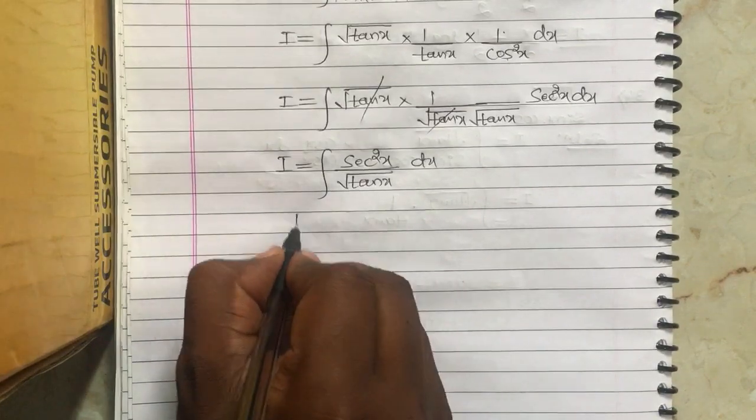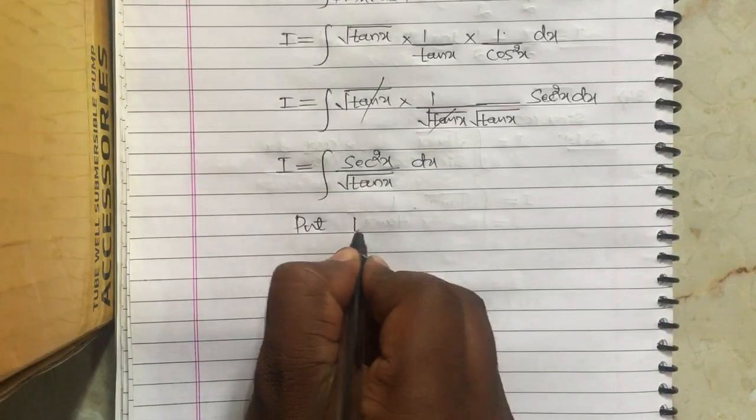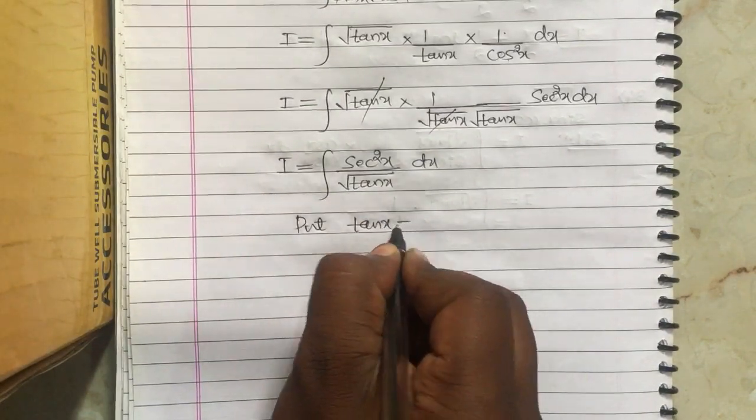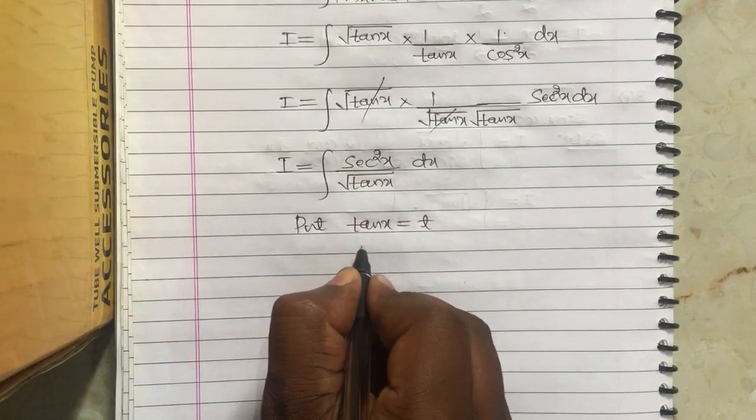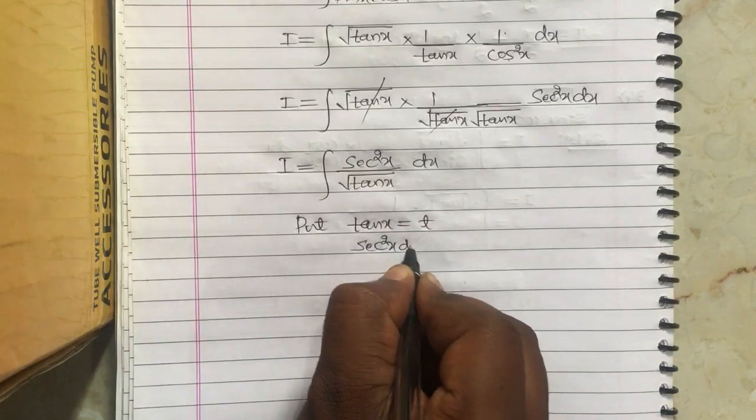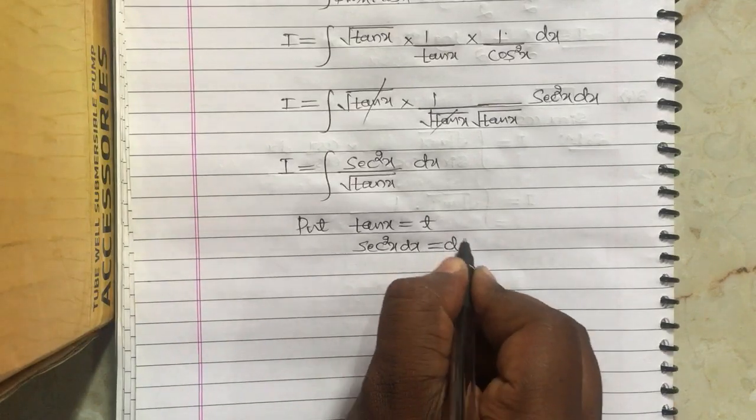Now I will go for substitution. Put tan x equals t. Differentiating both sides, we get secant square x dx equals dt.